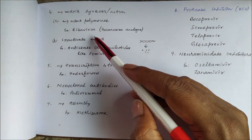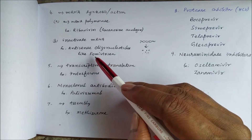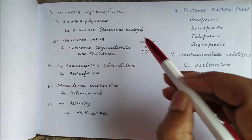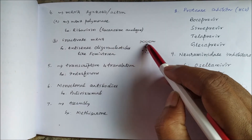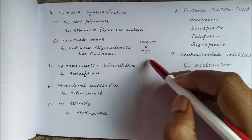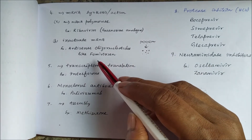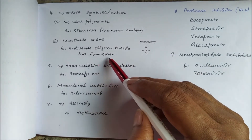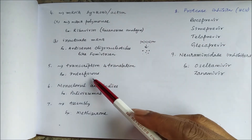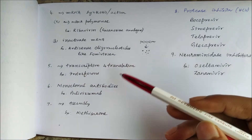We can also inhibit mRNA synthesis by inhibiting RNA polymerase — for example, ribavirin, which is a guanosine analogue. Alternatively, antisense oligonucleotides can hybridize with and inactivate messenger RNA, causing its degradation. For example, fomivirsen can be used. Interferons inhibit transcription and translation at different stages.